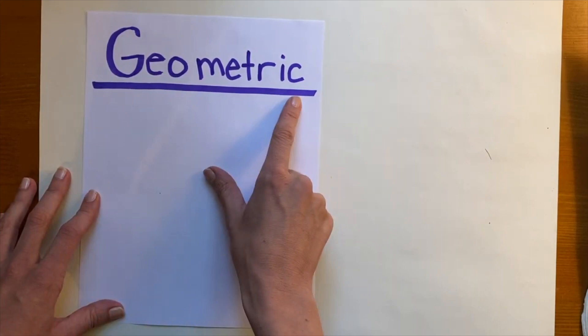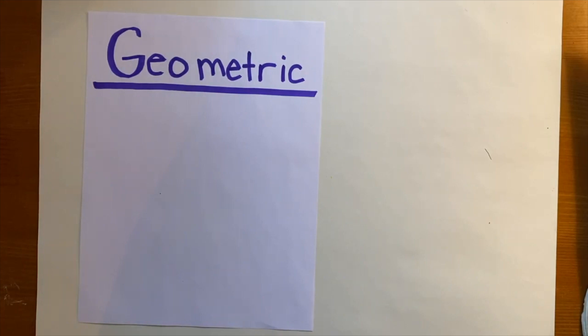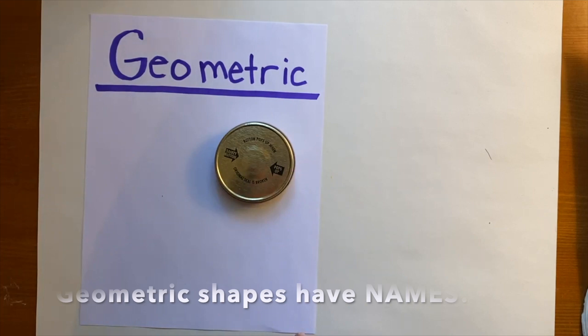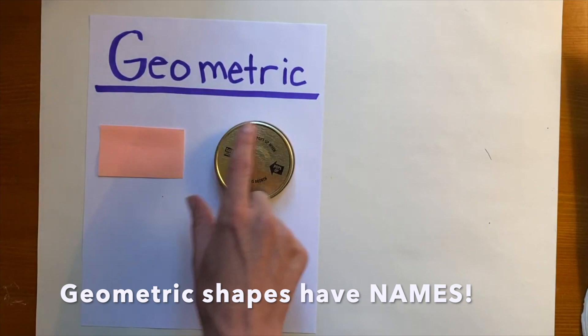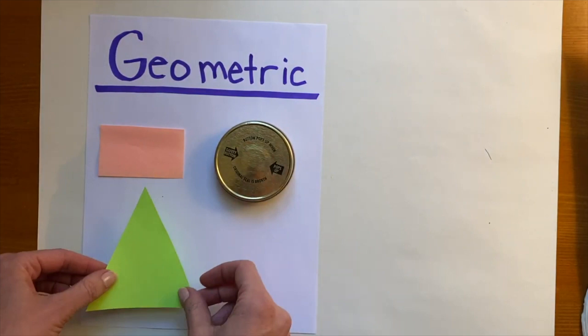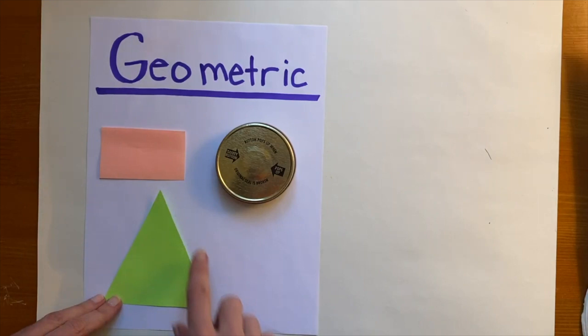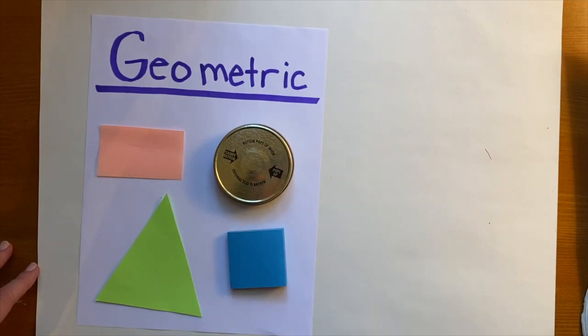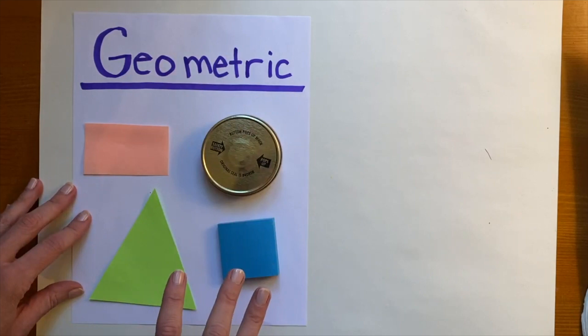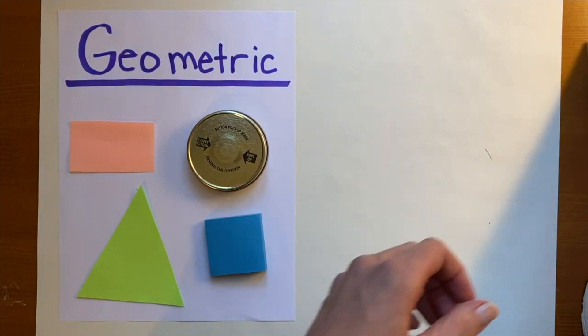There are two special kinds of shapes. The first family of shapes are called geometric shapes — can everyone say 'geometric'? Geometric shapes are shapes that are perfect, that have perfect measurements. For example: a circle — it's a perfect circle, so it's called geometric. A rectangle, a triangle, and a square — like this little stack of Post-it notes. This is one family of shapes called geometric shapes.